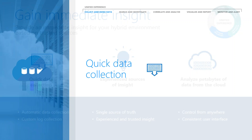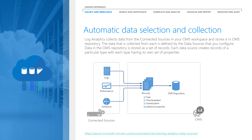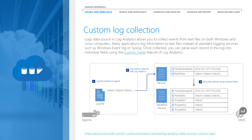Automatic data collection connects to your connected sources and pulls all data into the OMS repository, stored as records where each type has its own properties. This covers logs, performance counters, and built-in solutions. Besides standard logging like Windows event logs or syslogs, you can set up custom log collection for specific application logs by defining properties and custom fields, allowing that data to interact with your other data.